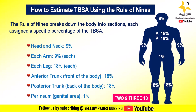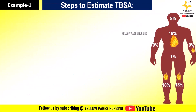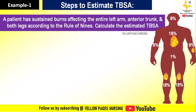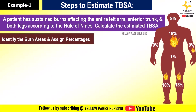Now let's learn the steps to estimate total body surface area with an example. A patient has sustained burns affecting the entire left arm, anterior trunk, and both legs. According to the Rule of Nines, calculate the estimated total body surface area. The first step is to identify the burn areas and assign percentages.